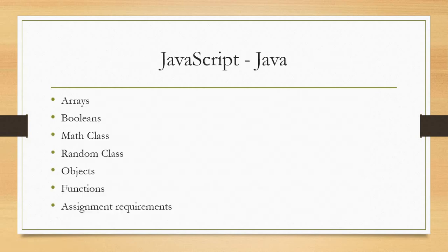Just like Java, JavaScript has arrays — those little brackets where you can put information in — booleans, which is true or false, a Math class, a Random class, objects, functions, and assignment requirements for variables.